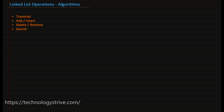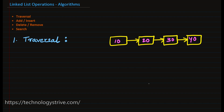In this video we are going to learn about linked list operations. We have already discussed linked list and its operations in the previous lecture. In this video we are mainly going to write algorithms for linked list operations. The first one we are going to discuss is traversal. To understand this operation, let's assume that we already have a linked list in place containing four nodes.